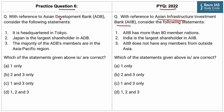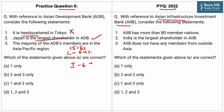With reference to Asian Development Bank, consider the following statements. Statement 1: It is headquartered in Tokyo. This statement is incorrect as the Asian Development Bank, or ADB, is headquartered in Manila, Philippines. Statement 2: Japan is the largest shareholder in ADB. This statement is correct because Japan, along with the United States, commands 15.6% of total vote share. China comes third with 6.4%, India fourth with 6.3%, and Australia fifth with 5.8% of vote share.